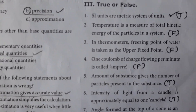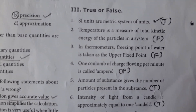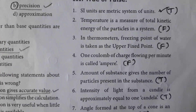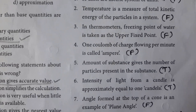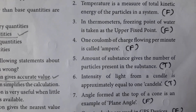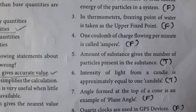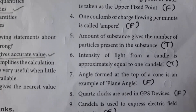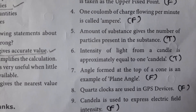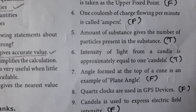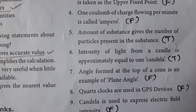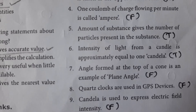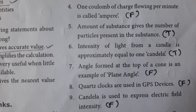One coulomb of charge flowing per minute is called ampere — False; it is per second. Amount of substance gives the number of particles present in the substance — True. Intensity of light from a candle is approximately equal to one candela — True. Angle formed at the top of a cone is an example of plane angle — False; it is a solid angle.